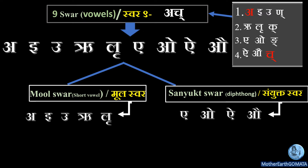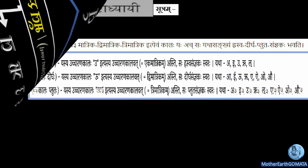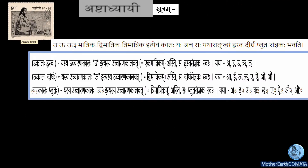Letters that are formed with the help of two Swar are known as Sanjukt Swar. Let us see how they are formed: A plus E equals A; A plus O equals O; A plus A equals I; A plus O equals O.